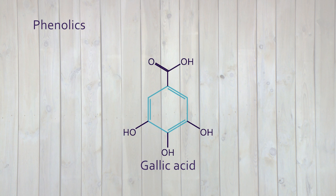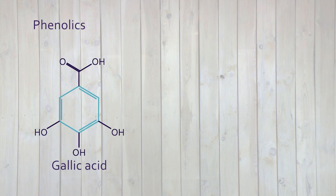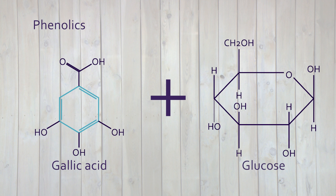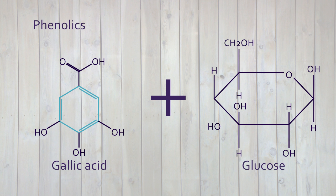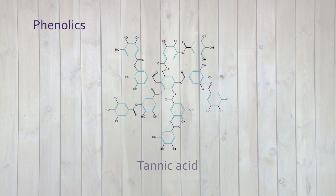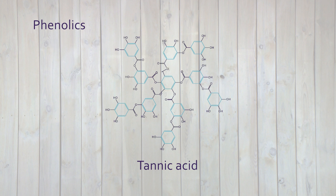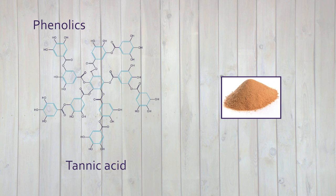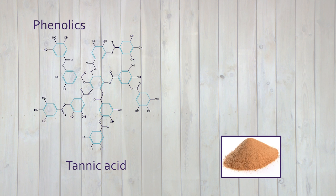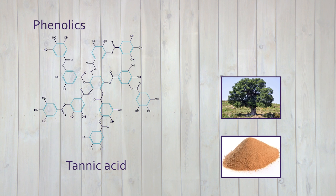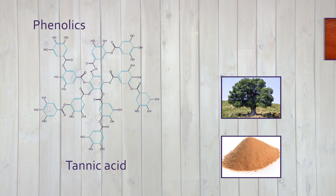Coupling multiple gallic acids together with glucose will form structures that are called tannins, for example tannic acid. Tannins are found in the bark of trees such as oak and are used for the tanning of leather.